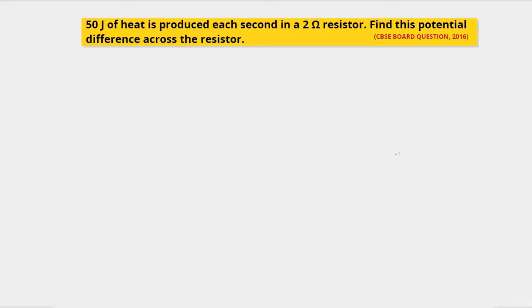Let us understand the concept, how will we solve this. Let's first draw the circuit diagram. So here we have a 2 ohm resistor which is connected to a source of potential difference.